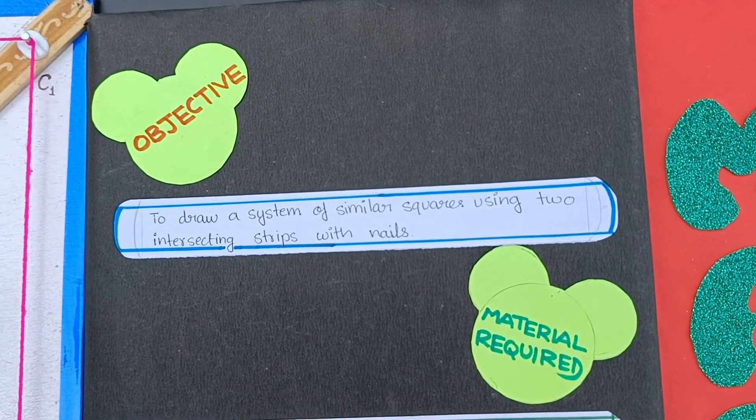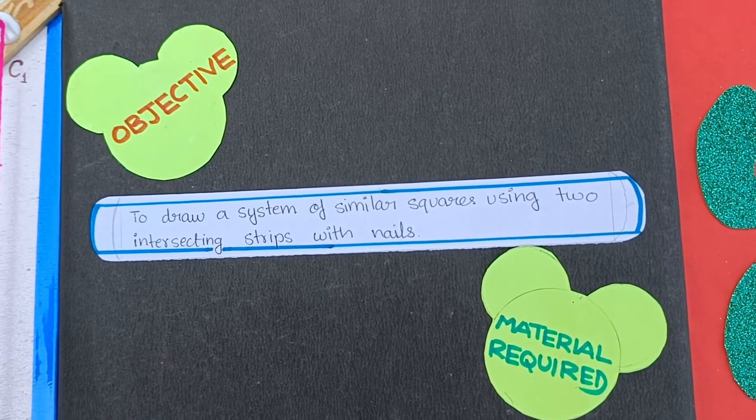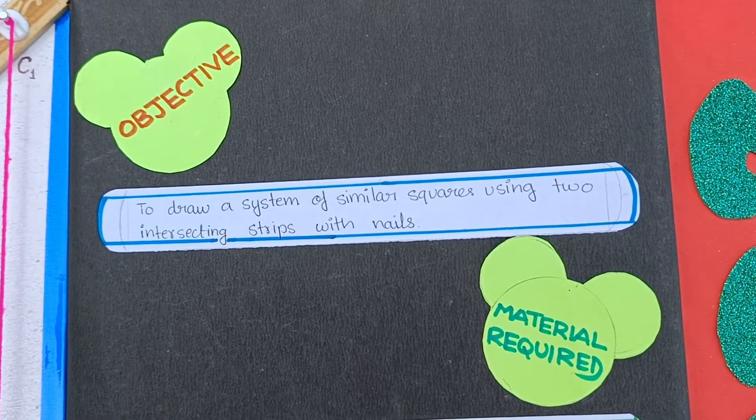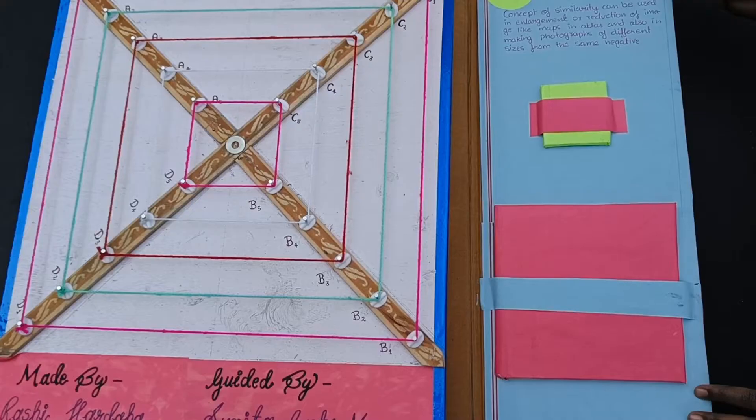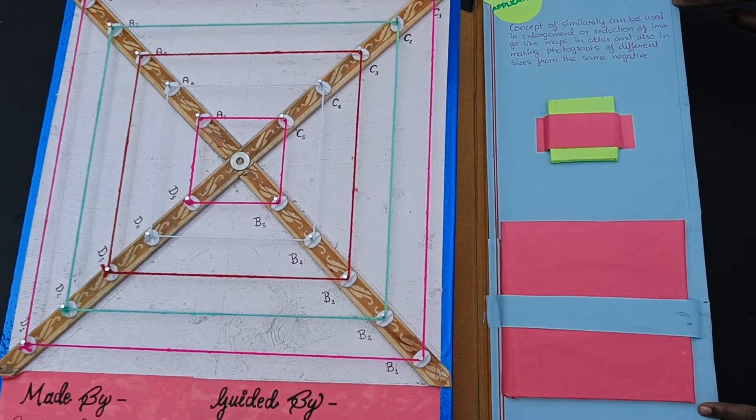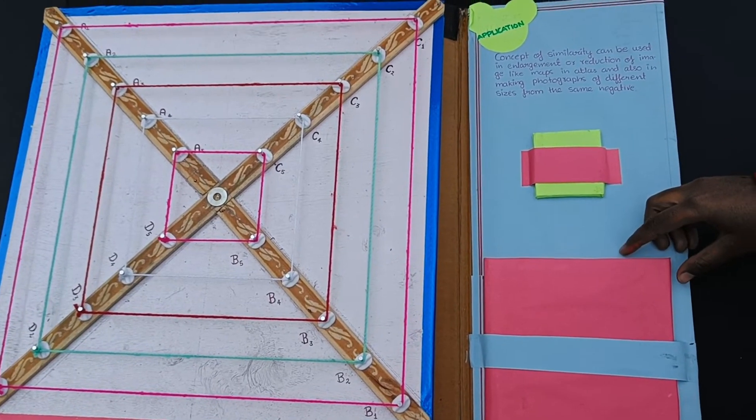The objective of this activity is to draw a system of similar squares using two intersecting strips with nails. For understanding this activity, we have to understand first the concept of similarity.